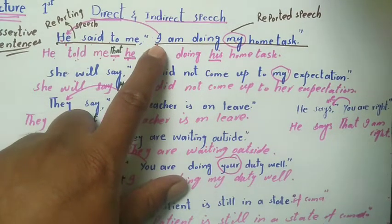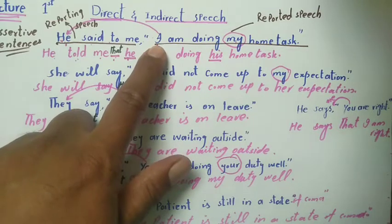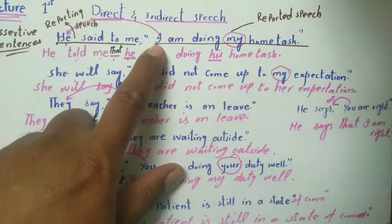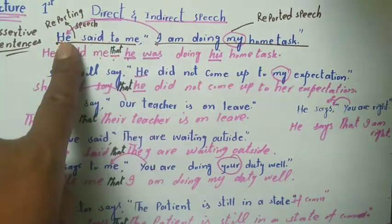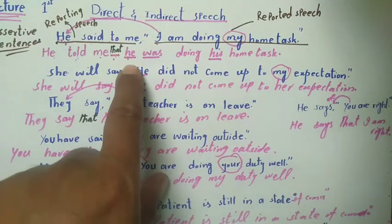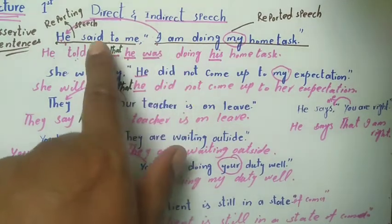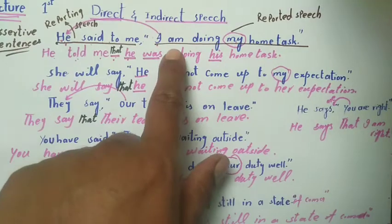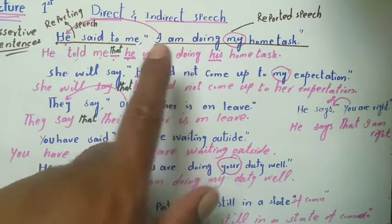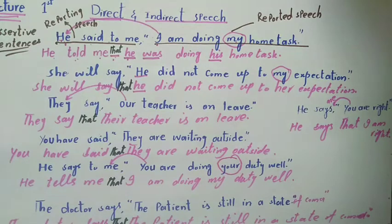The reported speech subject 'I' is first person, so we change it to match the reporting speech subject, which is 'he'. Since the reporting speech is past tense, we also change the tense: 'am drawing' becomes 'was drawing'. The possessive 'my' also changes to 'his' since the subject changed to 'he'. So the indirect sentence is: 'He told me that he was doing his home task.'